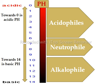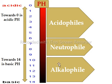Then we have neutrophiles, which are another group of bacteria that grow best when the pH is between 6 to 9. An example of neutrophilic bacteria is Lactobacillus acidophilus. Then we have another group of bacteria that grow best when the pH is between 10 to 14, known as alkalophiles. An example is Thermococcus alkalophilus.